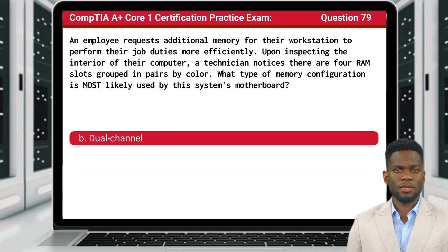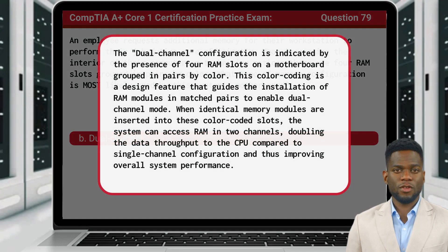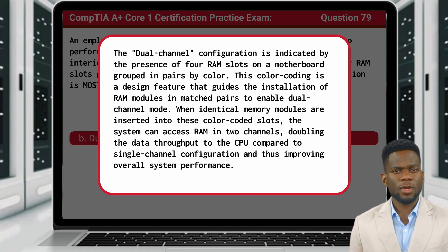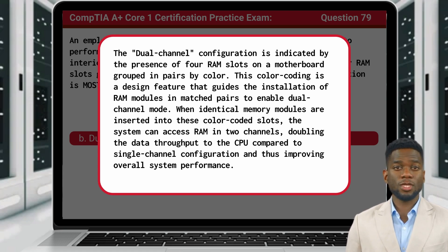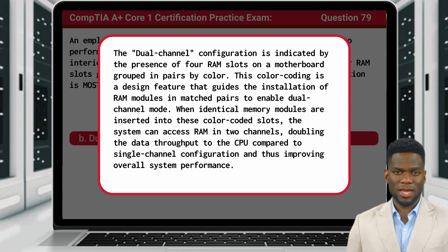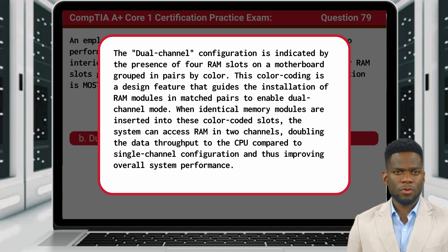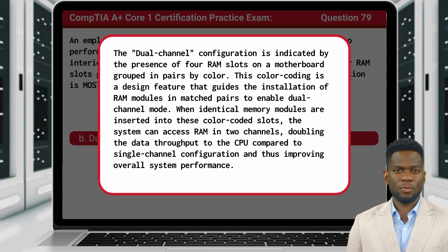The answer is B: Dual channel. The dual channel configuration is indicated by the presence of four RAM slots on a motherboard grouped in pairs by color. This color coding is a design feature that guides the installation of RAM modules in matched pairs to enable dual channel mode. When identical memory modules are inserted into these color-coded slots, the system can access RAM in two channels, doubling the data throughput to the CPU compared to single-channel configuration, thus improving overall system performance.